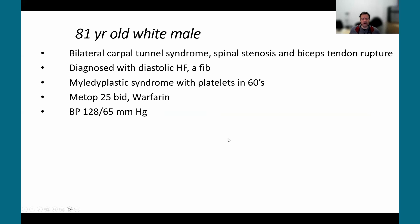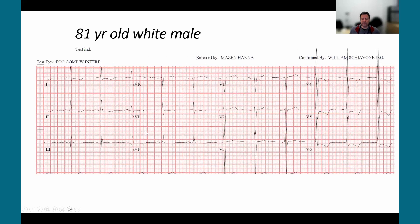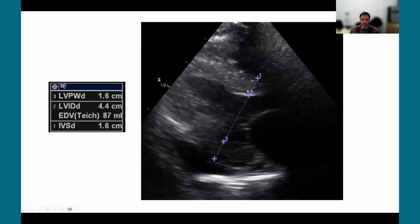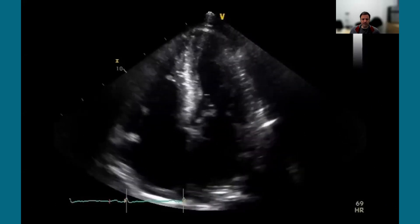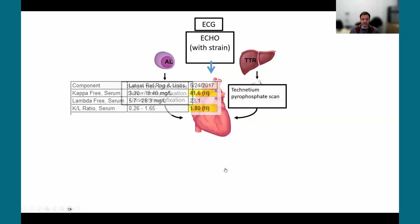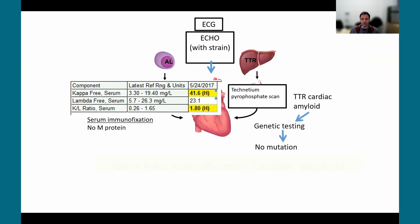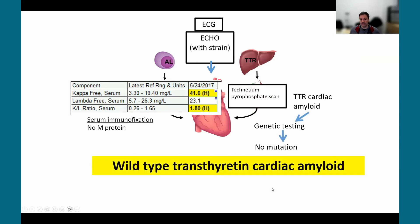Case 3: an 81-year-old white male with a history of bilateral carpal tunnel syndrome years prior, spinal stenosis, and a biceps tendon rupture, diagnosed with diastolic heart failure and atrial fibrillation. His EKG showed LVH by voltage, but wall thickness was 1.6 centimeters in both the septum and lateral wall — out of proportion to hypertension. The apical four-chamber echo showed biventricular thickening and very large atria, raising significant suspicion. He was diagnosed with wild-type TTR cardiac amyloidosis.